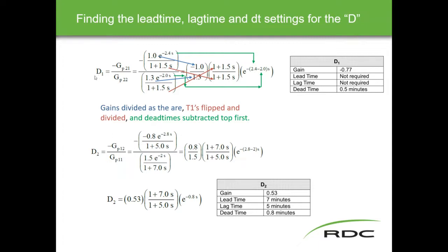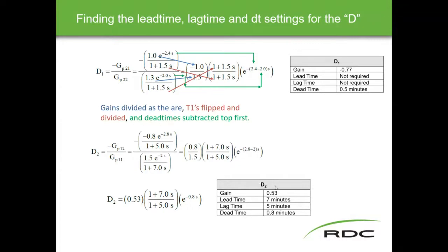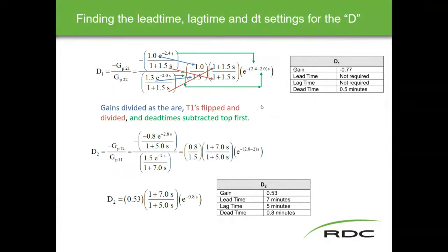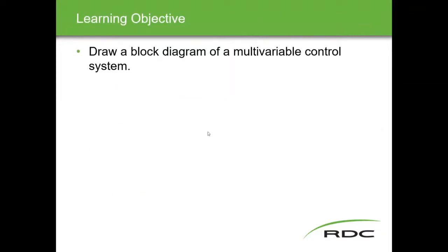The D1 formula is this formula; the decoupler 2 formula is this formula. The only difference is the combination of process variables and controllers used. So 0.8 over 1.5 here, with 1 plus 7 on top, 1 plus 5 on the bottom, and 2.8 minus 2 gives us the dead time. Our gain is the 0.53 value, the lead time is the top value, the lag time is the bottom value, and the dead time is this value. These ultimately become the settings put into decoupler two and decoupler one.